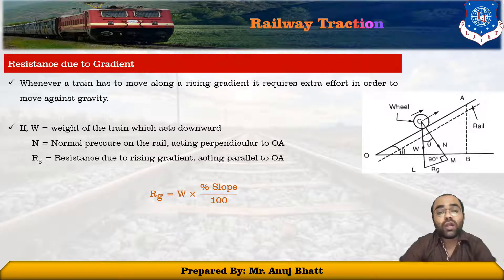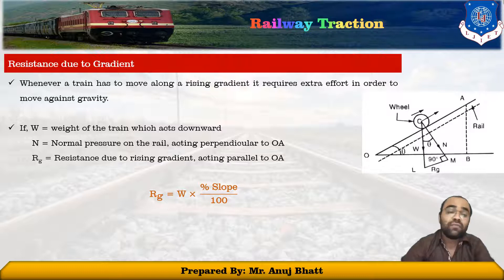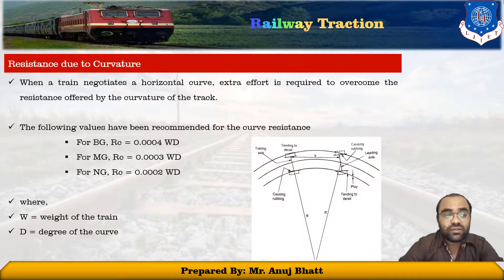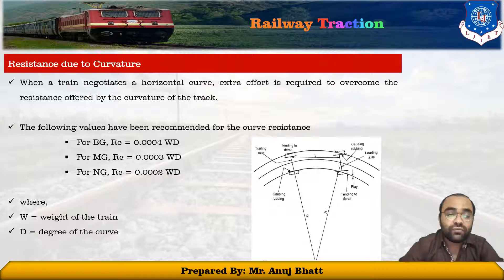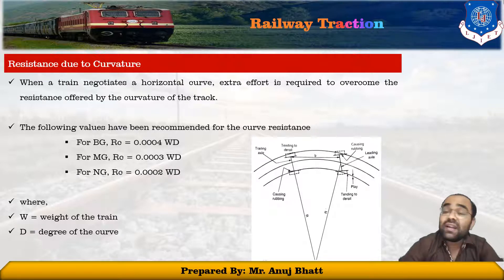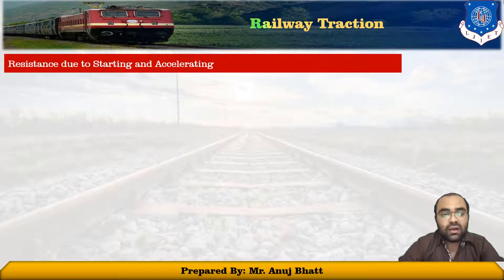Whenever a train has to move along a rising gradient it requires extra force to move against gravity. That can be found by rg = w × (percentage of slope / 100). Next is resistance due to curvature. When a train negotiates a horizontal curve, extra effort is required to overcome the resistance offered by the curvature of the track. Recommended values for curve resistance are: for broad gauge, 0.0004wd; for meter gauge, 0.0003wd; and for narrow gauge, 0.0002wd, where w is the weight of the train and d is the degree of the curve.